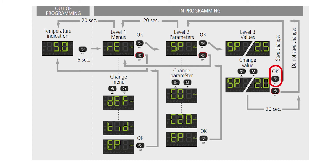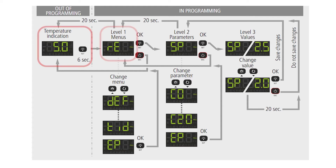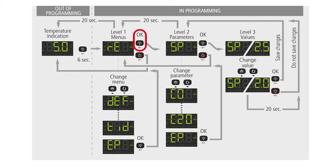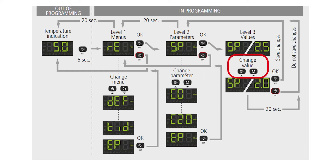Now once you have hit set, the controller will go back to the level two parameter menu. This sounds way more complicated than it really is. You can access the extended wizard parameter menu by pressing set on the controller for six seconds. This will take you to the level one menu and RE will be displayed. From there, press the up and down buttons to scroll to the level one parameter you want and hit set. Then use the up and down buttons once again to scroll to the level two parameter you want to select a value for and hit set. These level three values can be scrolled through until the correct one is shown. Hit set and you will go back to the level two values.